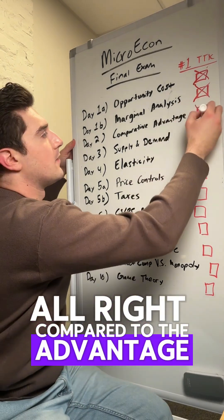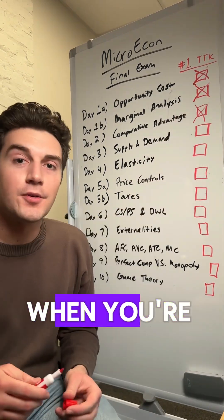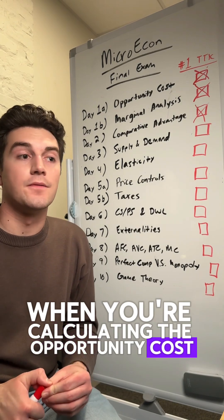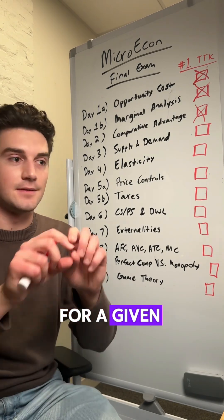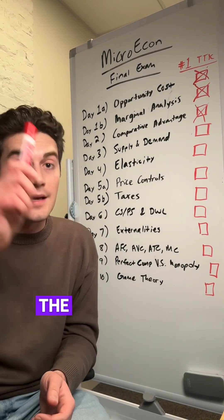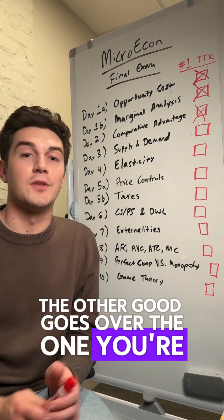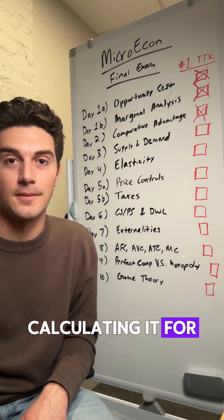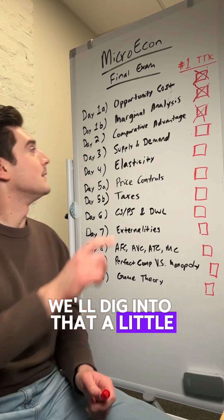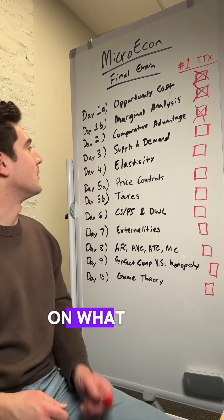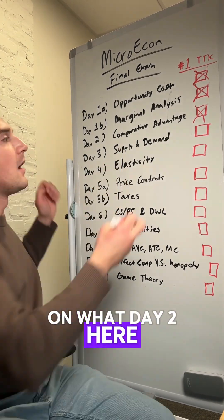Comparative advantage. When you're calculating the opportunity cost for a given square, the other good goes over the one you're calculating it for. We'll dig into that a little bit more on what they do here.